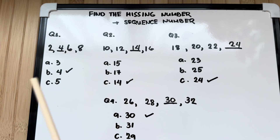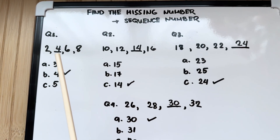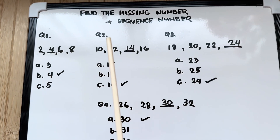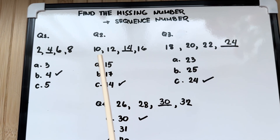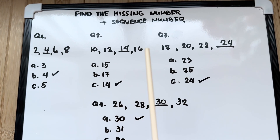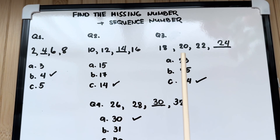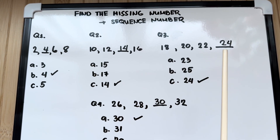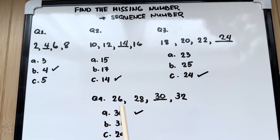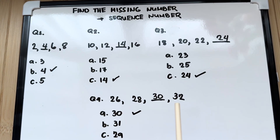Let's do a recap for sequence numbers. Question number 1: 2, 4, 6, 8. Question number 2: 10, 12, 14, 16. Question number 3: 18, 20, 22, 24. And lastly, question number 4: 26, 28, 30, 32.